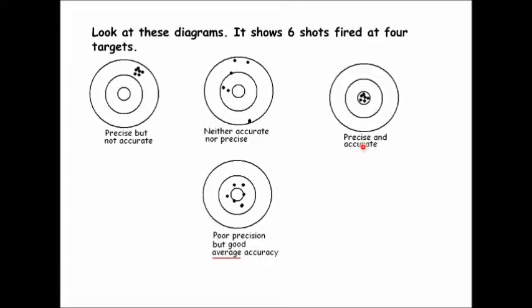The last target shows poor precision but good average accuracy. This is what you shoot for when making measurements in science — you never make just one measurement. Just like rolling a ball down a ramp, you repeat it five, ten, or twenty times — the more the better. When you find the average, you hopefully increase your average accuracy. Remember: to increase average accuracy, always make more than one measurement and average them together.